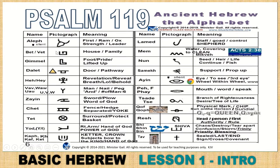Here is your ancient alphabet. Dalet — this is not the third eye, this is a portal and a door. The triangle represents a door. These are the ancient symbols: a shepherd's staff, water, the seed, support, the third eye, the eye, wheel within the wheel, your mouth, branch of righteousness, Q for queen, head or authority, Shiva, and the last is the seal.